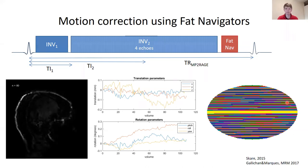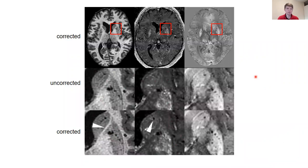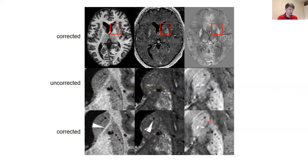Here we see an example: on top, the multimodal images. Zooming into a small region, we see the uncorrected data and then the corrected data. In the T1, the anterior limb of the internal capsule is sharply defined compared to the uncorrected image. We also see enlarged Virchow-Robin spaces that were invisible in the uncorrected images but appear in the corrected data. In the QSM, it was already visible in the phase data but slightly attenuated compared to the corrected data.